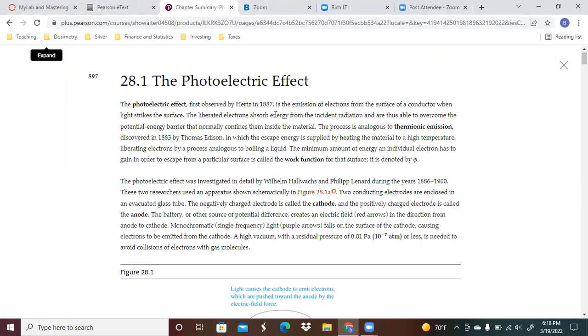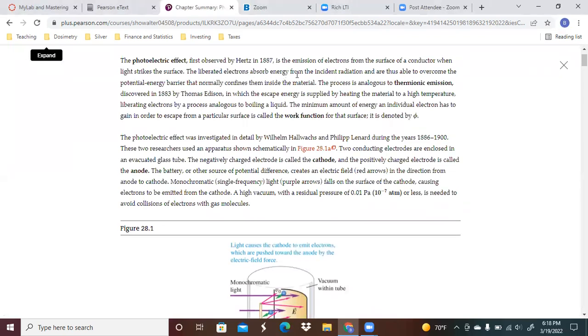It was first observed by Hertz in 1887. The photoelectric effect is the emission of electrons from the surface of a conductor when light strikes it. The liberated electrons absorb energy from the incident radiation and are able to overcome the potential difference barrier that normally confines them inside the material. The process is analogous to thermionic emission, discovered in 1883 by Edison, in which the escape energy is supplied by heating material to a high temperature, liberating electrons by a process analogous to boiling liquid.